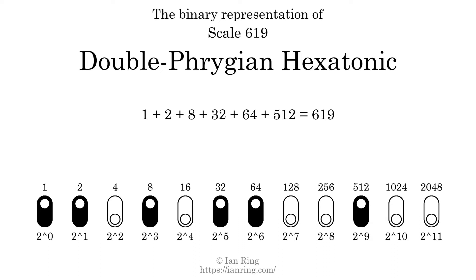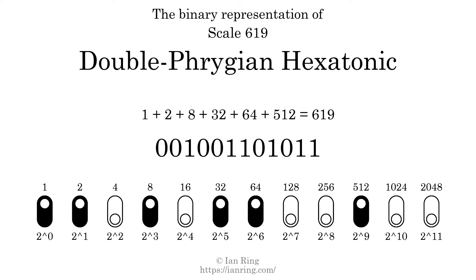The scale number not only enumerates the scale with a unique index, but it also literally describes the tonal content of the scale. Represented as a binary number in base 2, the scale number is 0 0 1 0 0 1 1 0 1 0 1 0 1 1.